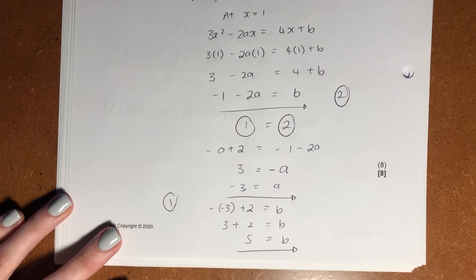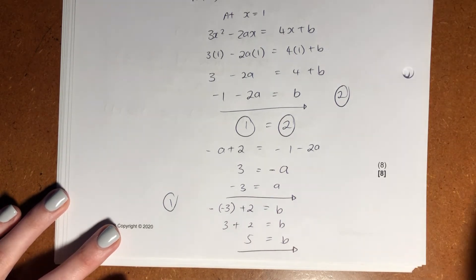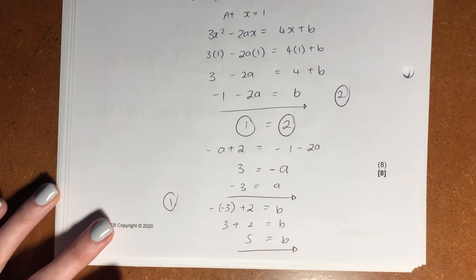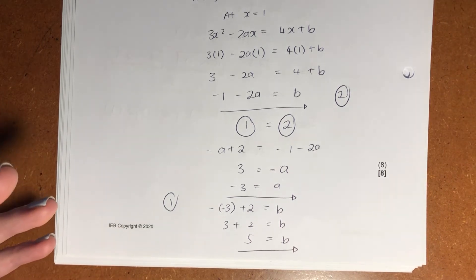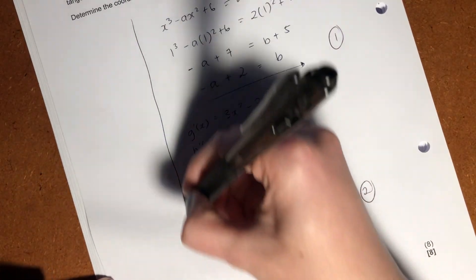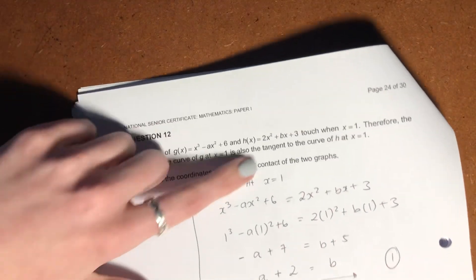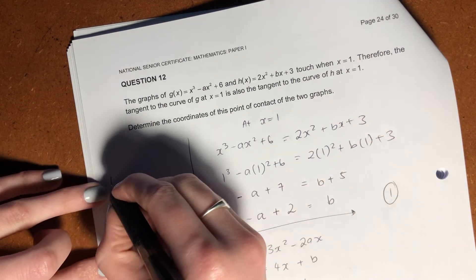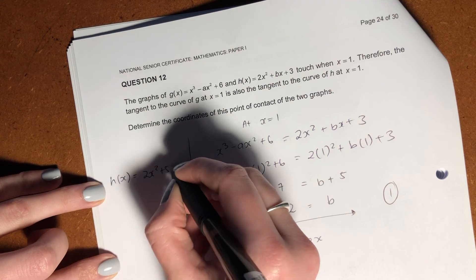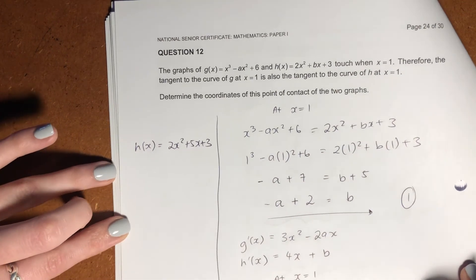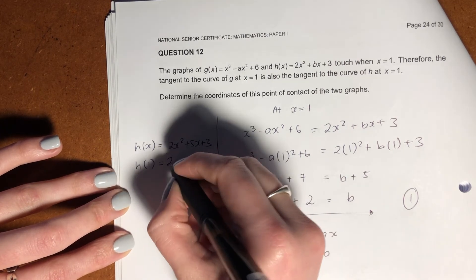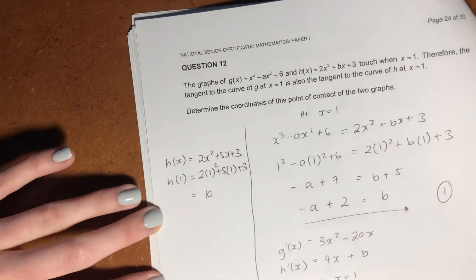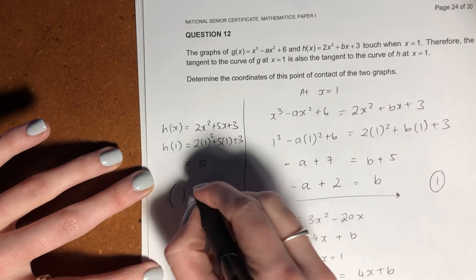So now all we need to do is we need to sub back into one of our original equations. You can use either of them and put in the a and the b values, sub in the x value of 1, and then you can get the y value, which gives me the coordinates of the point of intersection, which is what I want. So I'm just going to do it over here and I'm going to do it into the parabola, not because there's any specific reason, but just because it's easier from a substitution perspective. So we know that this is what the parabola is, because we solved for b already. Let's now get h of 1. So sub that in and that gives you 10. So the coordinates of the point of intersection is 1 and 10.